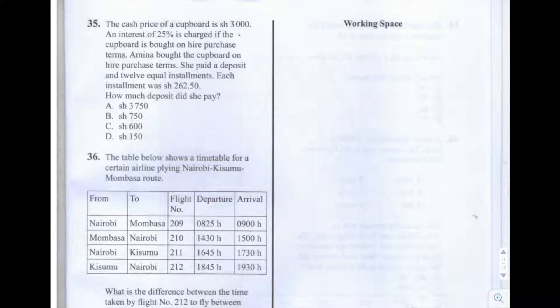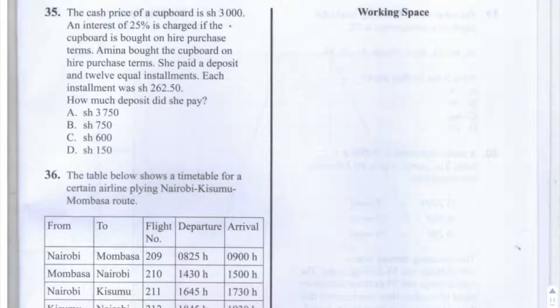We're told that Amina pays an amount which is equal to the cost of the deposit, let's call that small d, plus the cost of 12 equal installments. So she pays 12 installments. Let's say the value of one installment, which we know is 262 shillings and 50 cents, is I. So the total of 12 installments we'll call 12I. And this is the total, let's call that T, that she pays. And we want to find out how much deposit she paid.